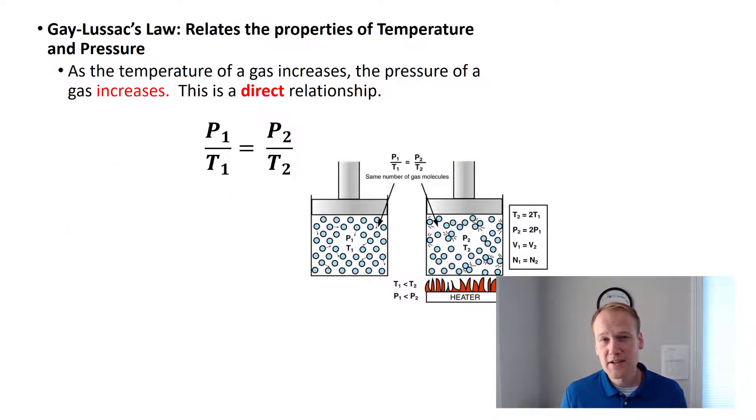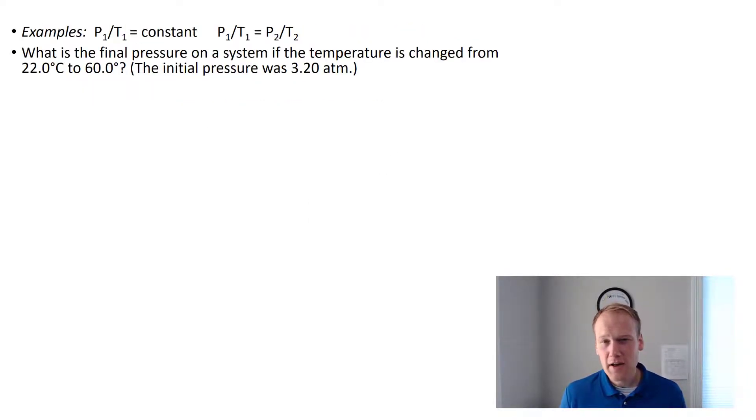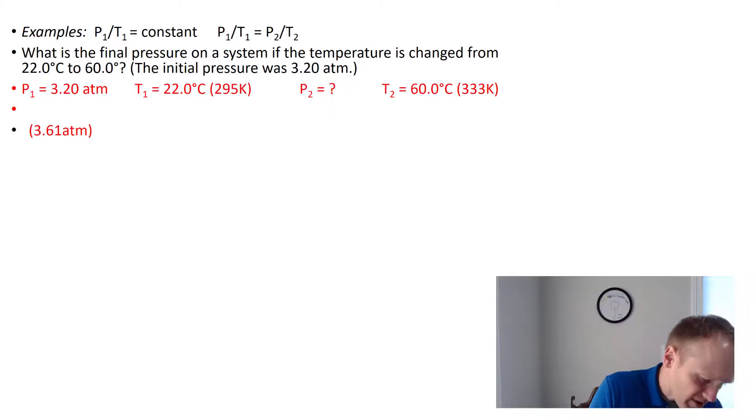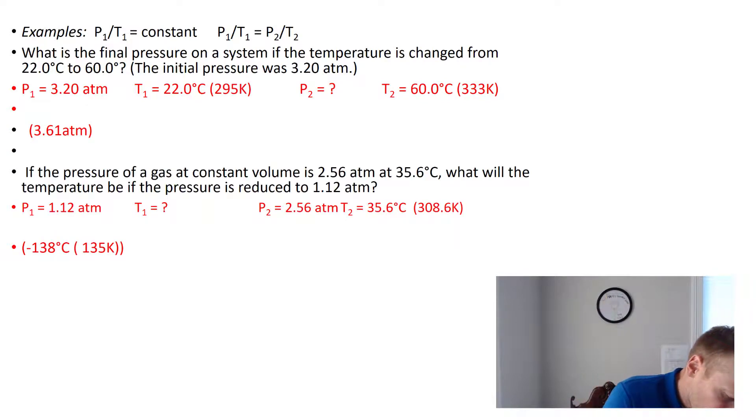The next gas law is Gay-Lussac's law. It is a relationship between pressure and temperature. As temperature increases, not only does volume increase, but pressure also increases. Once again, this is why we don't heat up closed containers of gas. It's dangerous. These practice problems look very similar to the last law. We're going to have to make sure we keep our temperatures in Kelvin so we don't have negative temperatures. You can see that we're going from 22 to 60 with our initial pressure, so P1 being 3.2. So our initial temperature is 22, and our final temperature is 60. We'd set this up, calculate for P2, and we get 3.61 atmospheres. Here's another quick example that's solving for T1. Notice that we get 135 Kelvin. We subtract the 273 to get our answer back to Celsius, which is negative 138. I hope you're starting to see that the math with these problems is not too difficult. As long as you identify the variables correctly and put them in these basic equations, you're going to get the right answer.